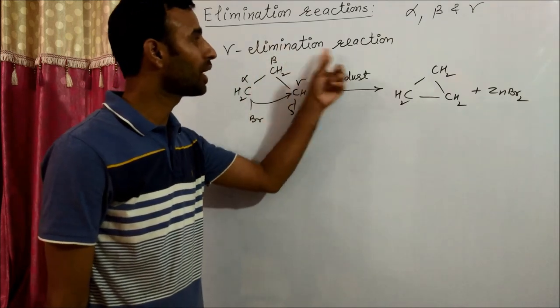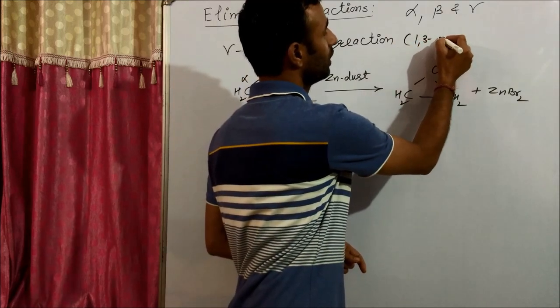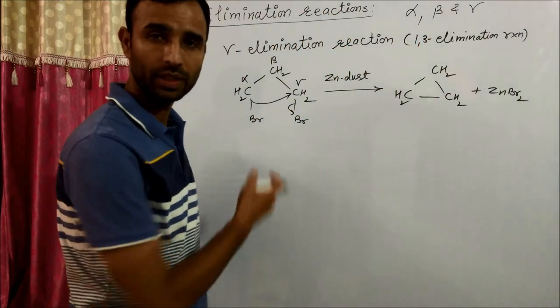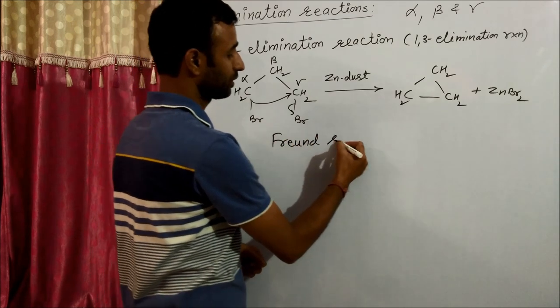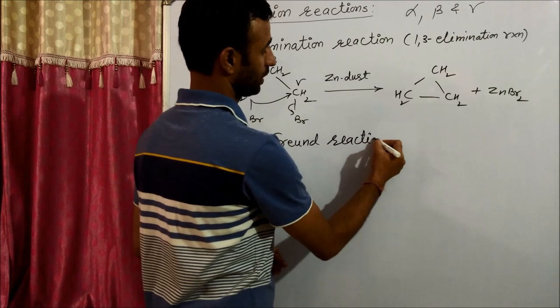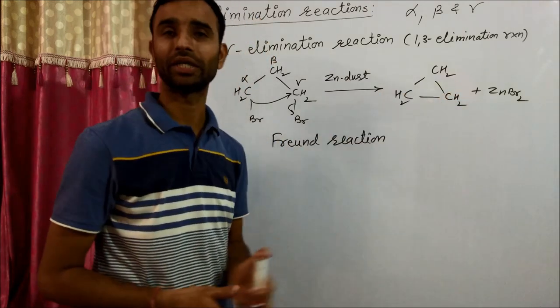This is called gamma elimination reaction or 1,3-elimination. This reaction is known as Freund reaction and is extensively used in the synthesis of three-membered rings.